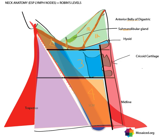Robbins level 1A is the submental triangle, formed by the anterior belly of the digastric, the midline, and the hyoid bone — the submental lymph nodes are found within it. Robbins level 1B is the medial part of the digastric triangle, also known as the submandibular triangle. Taking the medial part from this posterior border of the submandibular gland, everything in that area is level 1B, which contains the submandibular gland and the submandibular lymph nodes.